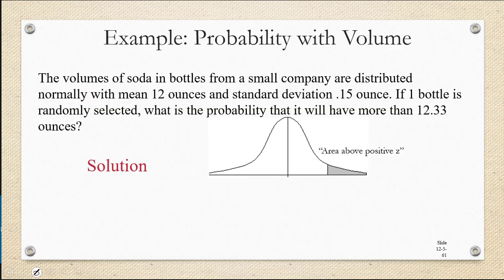In all of the examples so far, we were given z-scores, but in this example, we're actually given data values, and we'll have to convert them to z-scores in order to answer the question. It says the volumes of soda in bottles from a small company are distributed normally. That's important because we couldn't use the standard normal distribution in the z-table if we didn't have a normal distribution.